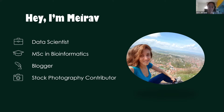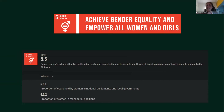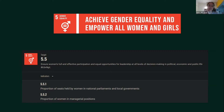I assume I don't have to convince anyone in this Meetup that gender equality is crucial. It is so crucial that the UN made it one of its sustainable development goals to be reached by 2030. One of the targets of this goal is to ensure women's full and effective participation and equal opportunities for leadership at all levels of decision-making in political, economic and public life. For each target there are measurable indicators, and the first one for this target is the proportion of seats held by women in national parliaments and local governments, which is exactly what we're going to be looking at in this talk.